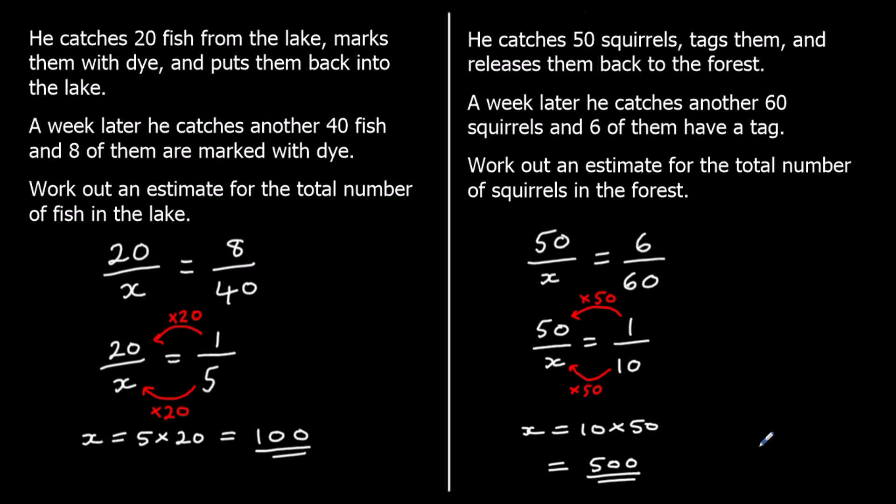So our estimate is that there are 500 squirrels. Again, we've assumed that all the tags stayed on the squirrels. If some had fallen off, then there would actually be less than 500 squirrels. Because this 6 would have been a bigger number, which would have meant that we multiplied by a smaller number here and we ended up with a smaller answer. So if some tags had fallen off, there would actually be less than 500 squirrels. We would have overestimated.